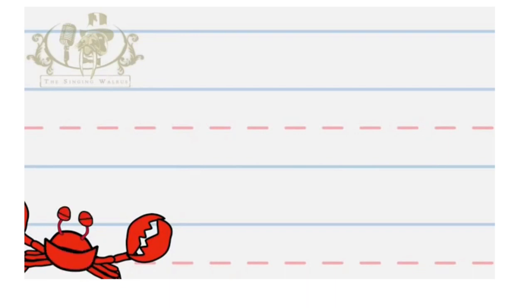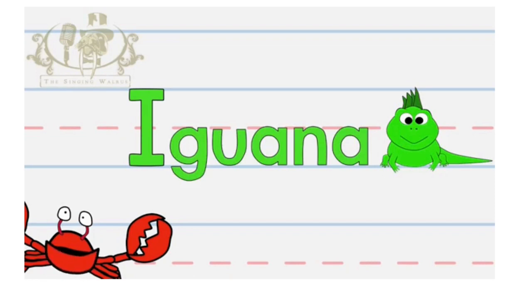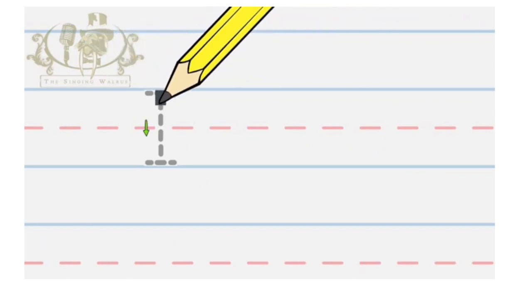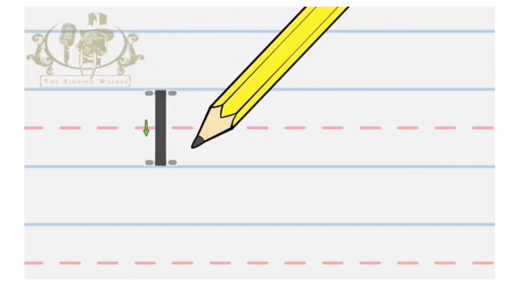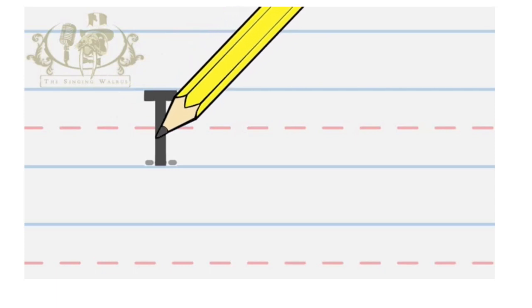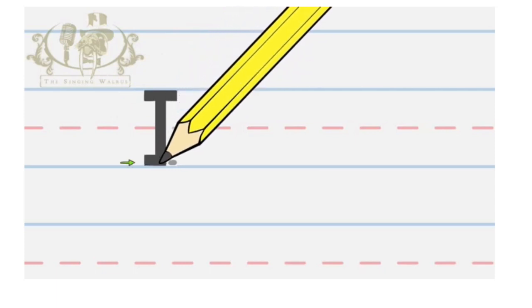Hey kids. Now we're going to write the letter I as an iguana. I, I, I, Iguana. You'll need a pencil first. We'll write the capital I. That's the big I. Start at the top and make a line down. Down. Go back to the top and make a line across. Then, go to the bottom and make another line across.